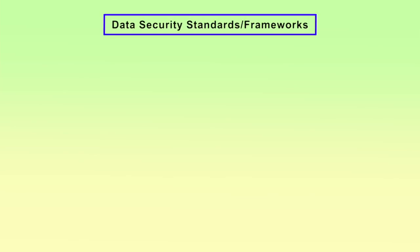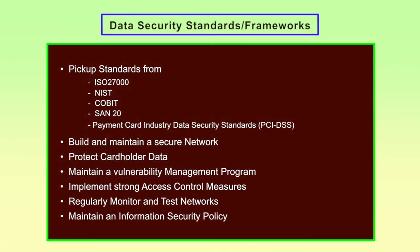Let's look at data security standards and frameworks. We have to pick up standards from ISO 27000, NIST — the National Institute of Standards and Technologies — COBIT, SAN, and Payment Card Industry Data Security Standards. These standards guide us to: build and maintain a secure network, protect cardholder data, maintain a vulnerability management program, implement strong access control measures, regularly monitor and test networks, and maintain an information security policy. These data security standards should be followed and framed to have a secure networked environment.